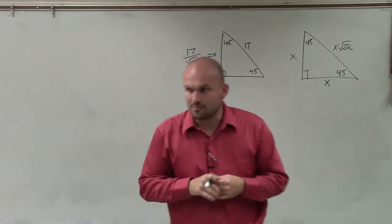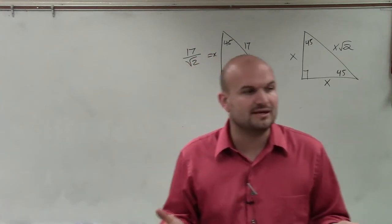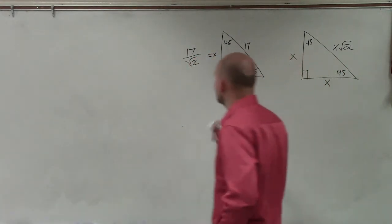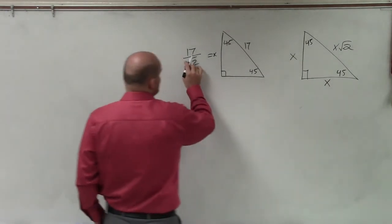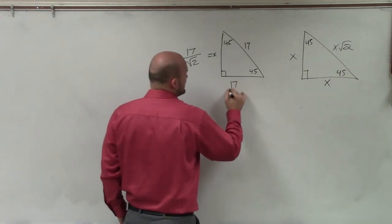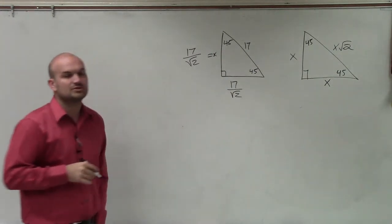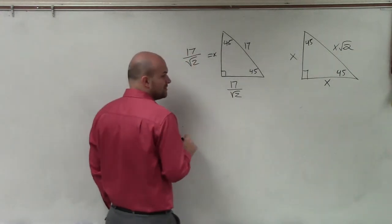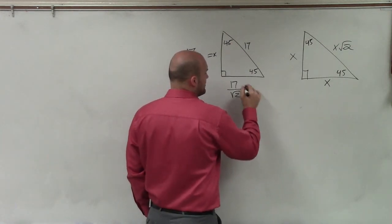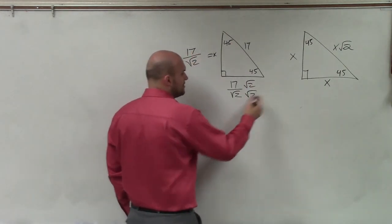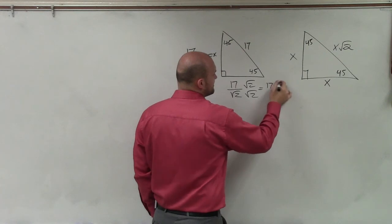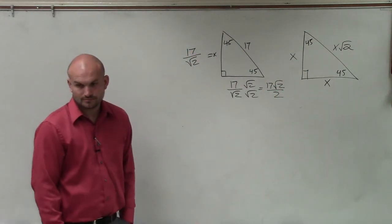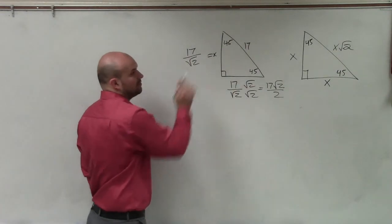But we have to be careful because we're not going to want to leave our answer like that. We're going to want to rationalize the denominator. So to do that, if that's 17 divided by the square root of 2, to write our answer with not an irrational number in the denominator, we'll multiply by the square root of 2 on the top and the bottom. And therefore, we get 17 square root of 2 over 2. OK? And that should be your answer for both of those legs.